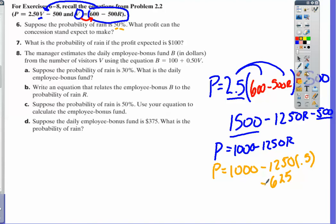So 1,000 minus 625 equals $375. If you have a 50% chance of rain, we can expect to earn $375 in pure profit.